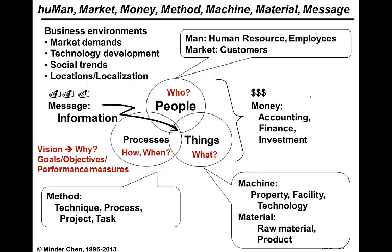In this slide, we have what I call the 7M, including human resources, which is people — that includes employees and customers — and they reflect the marketplace as well. And things, which are machines and materials, as well as process, which tells us what project, task, or business process we should carry out.